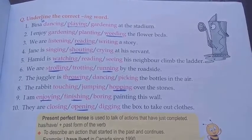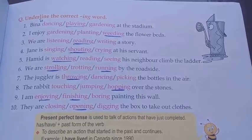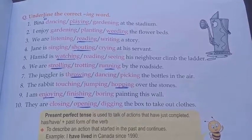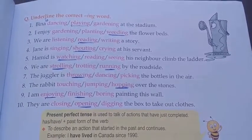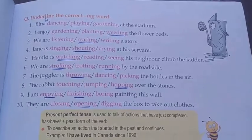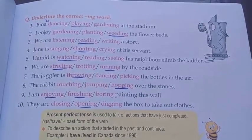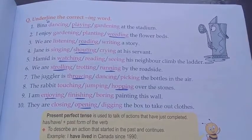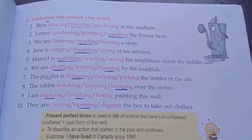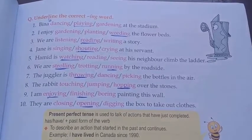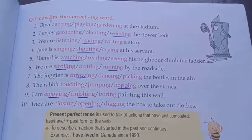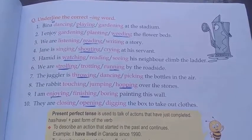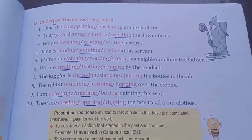Number 6: we are strolling by the roadside — strolling. You can also underline it. Number 7: the juggler is throwing the bottles in the air — throwing. Number 8: the rabbit is hopping over the stones — hopping. Number 9: I am enjoying painting this wall — enjoying. Number 10: they are opening the box to take out clothes — opening.